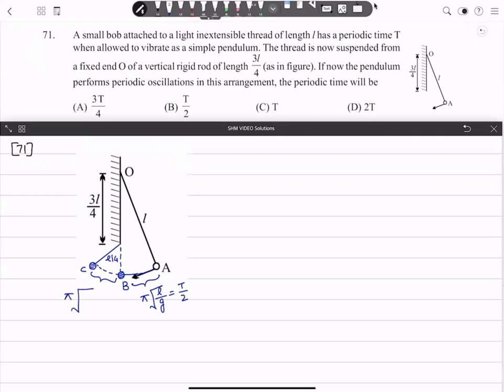L by 4 upon G. So if you look at this, this is T by 4, where T value is 2π√(L/G). So L by 4 is 1 by 2, so T by 2 and T by 4.